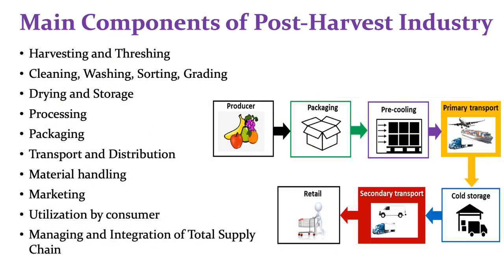The post harvest industry includes various components from harvesting up to consumption. For example, harvesting and threshing, which can be combined by a combined harvester or modern processing equipment. Then cleaning, washing, sorting, grading — these are the first and most important unit operations to reduce damage to further processing equipment and to increase the value of the commodities.